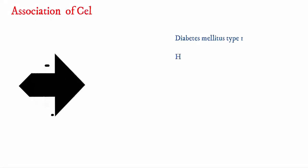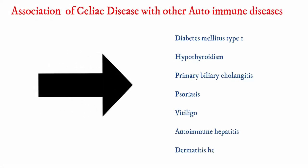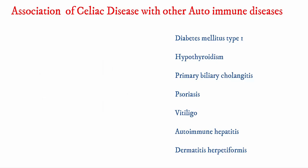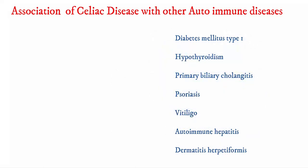Celiac disease may be associated with other autoimmune diseases like diabetes mellitus type 1, hypothyroidism, primary biliary cholangitis, psoriasis, vitiligo, autoimmune hepatitis, dermatitis herpetiformis, and more.